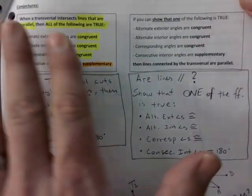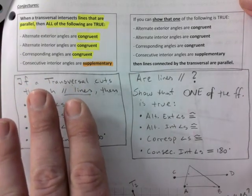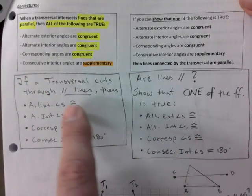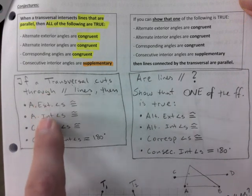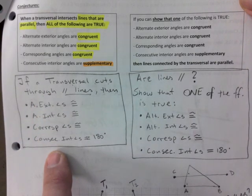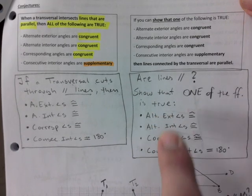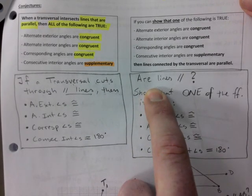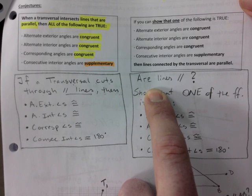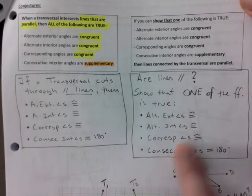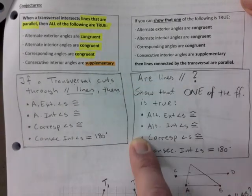So page six, I told you that if we're told that lines are parallel and you have a transversal cutting through them, then all of these things are true. Conversely, if you're able to show that one of these properties is true, then you can conclude that lines are parallel. So this is what we're gonna try to do here in this section, except we're gonna throw in polygons in the mix.